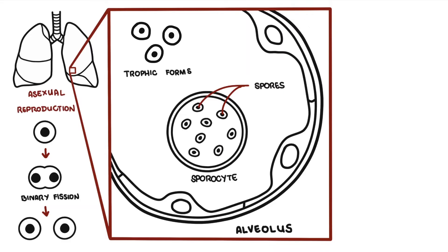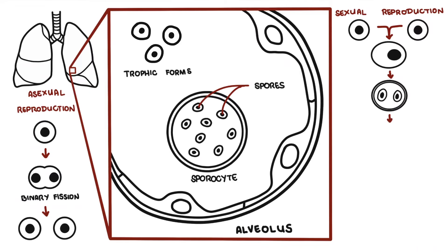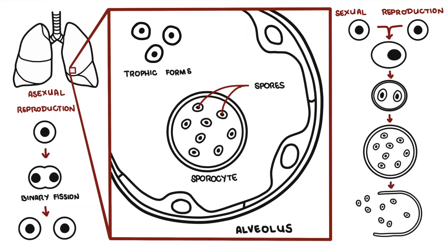Alternatively, the trophic forms can undergo sexual reproduction — the trophic forms mate, divide, and form many spores inside a closed wall. This structure is called a sporocyte. A sporocyte is a cell that contains many spores. The sporocyte will eventually rupture and release all the spores it contains, and these spores will then eventually become the trophic form of the organism once again.